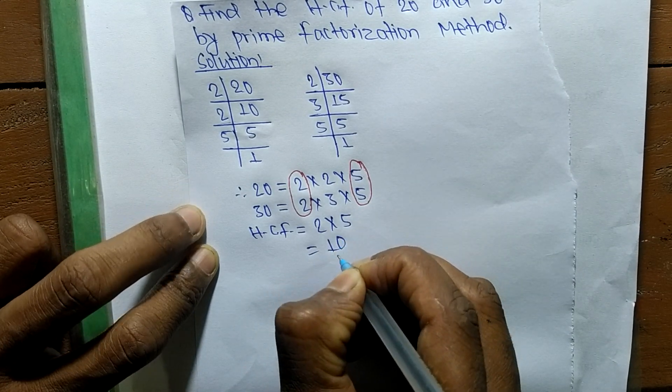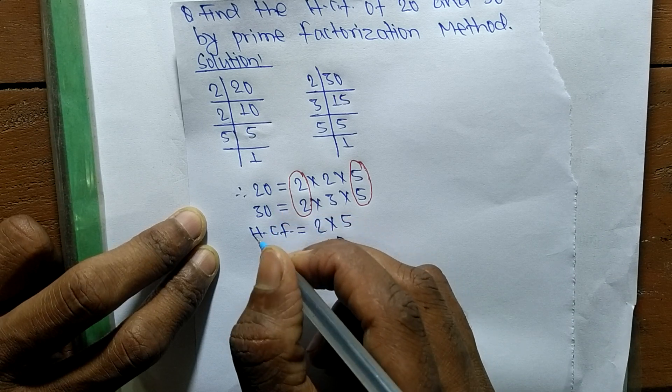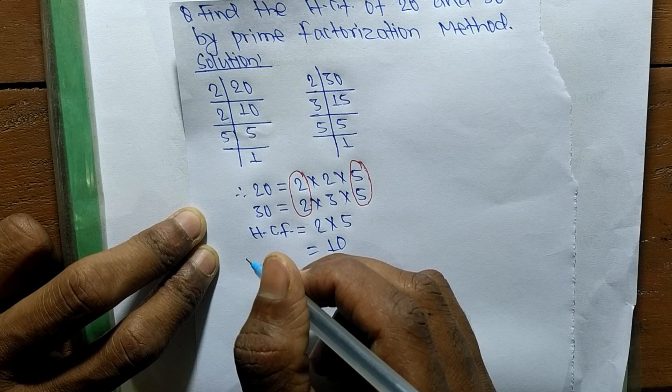So 10 is the highest common factor of 20 and 30. So this much for today and thanks for watching.